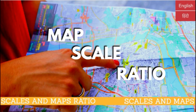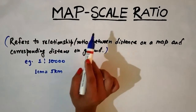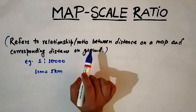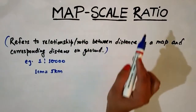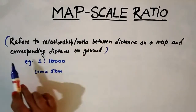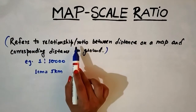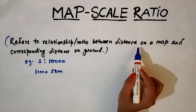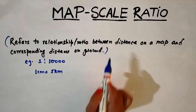The topic for today is map scale ratio. Before going into the detail, let me first give you a brief introduction about what map scale ratio means. Map scale ratio basically refers to the relationship, or the ratio, between the distance on the map and the corresponding distance on the ground.